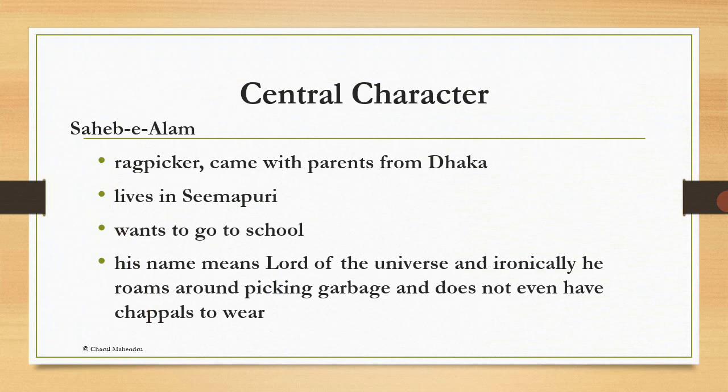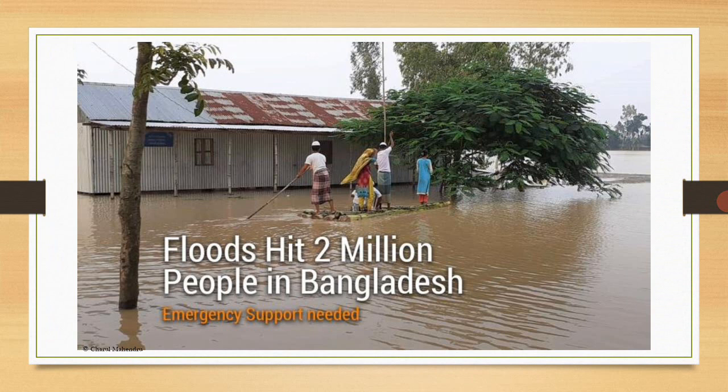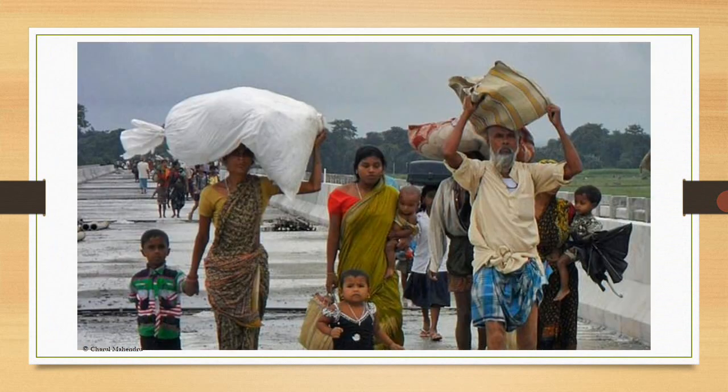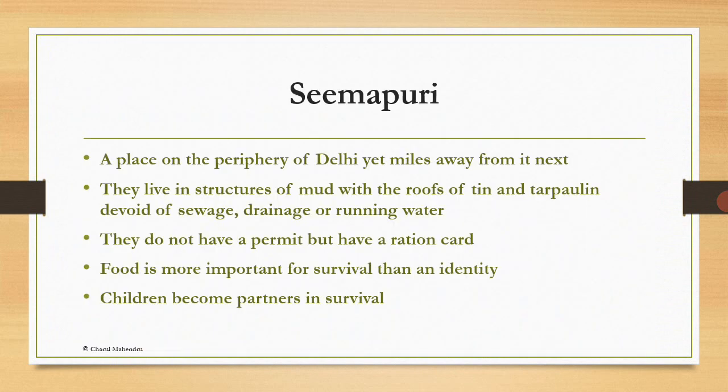His name means Lord of the Universe, and ironically he roams around picking garbage and does not even have chappals to wear. These are the flood-hit areas of Bangladesh — people migrate to other safer areas, and we find Bangladesh refugees living on the outskirts of Delhi in a slum area called Simapuri. It is a place on the periphery of Delhi, yet miles away from it.